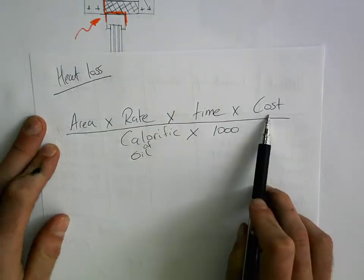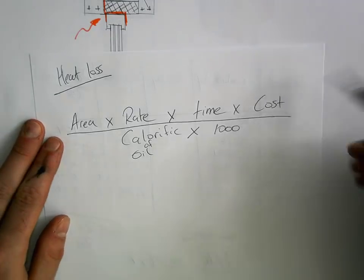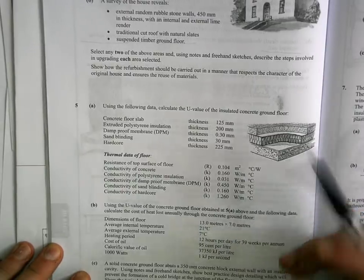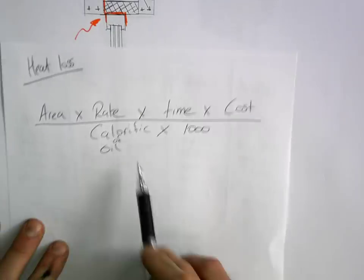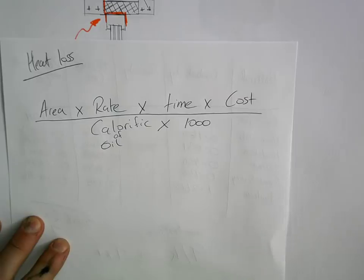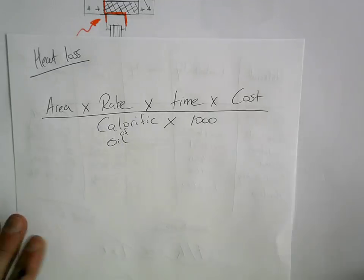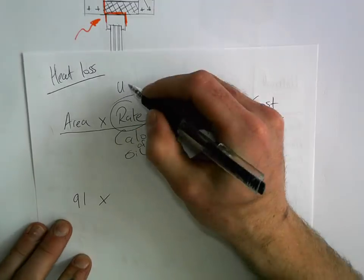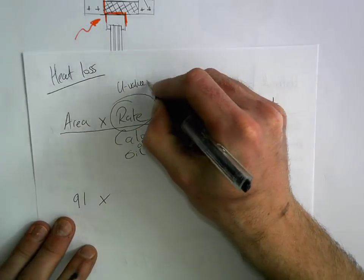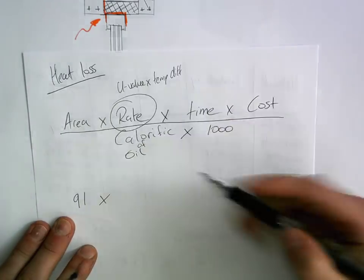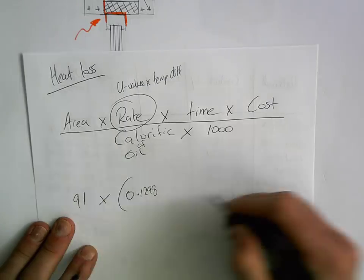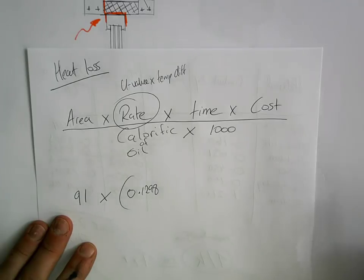Every figure given in the question goes on the top line — you're multiplying everything together and dividing by calorific value × 1000. The area is 13 by 7, giving 91 square meters. The rate is your U-value from Part A multiplied by the temperature difference. The U-value was 0.1298, and if it's 21 degrees inside and 7 outside, the temperature difference is 14.